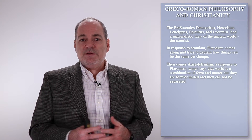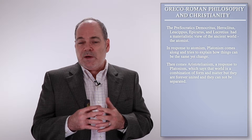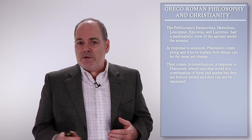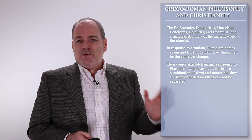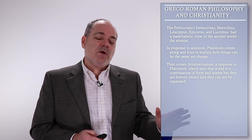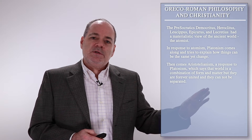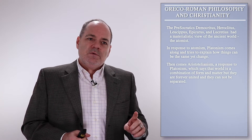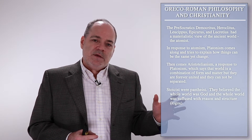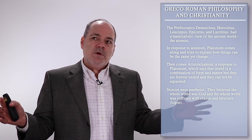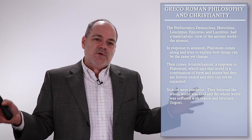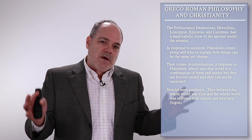Later on, this whole debate on how universals relate to things continues all the way into the medieval period, up to the doorstep of modernity, when modernity will turn its back on that whole way of thinking and jettison it altogether. There is one other school of thought already mentioned: Stoicism. The Stoics were pantheists — they believed that the whole world was God, and that the whole world was suffused with reason and structure, also known as the Logos.